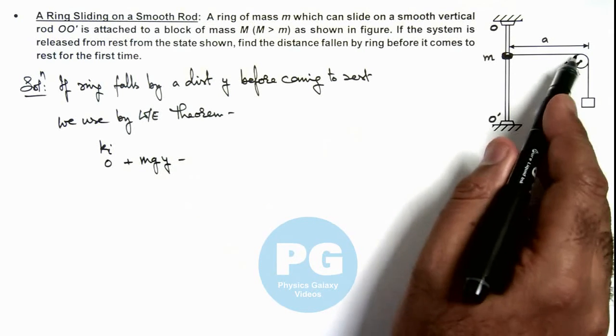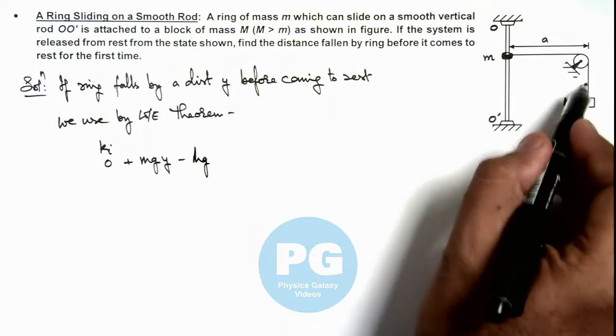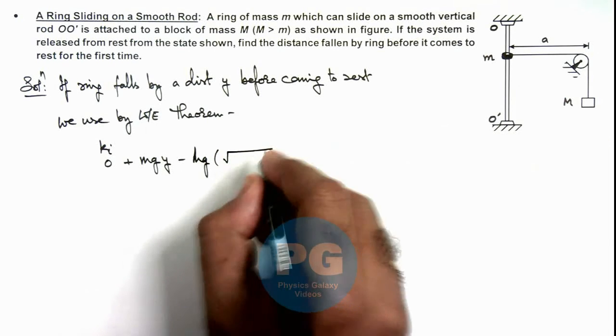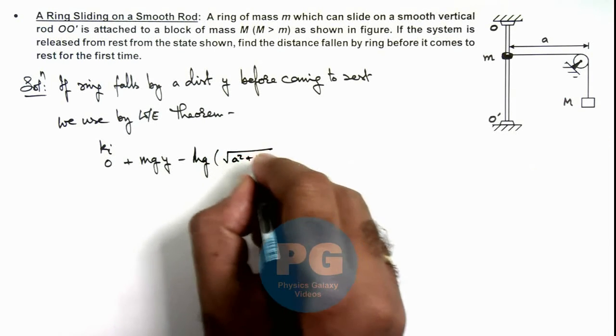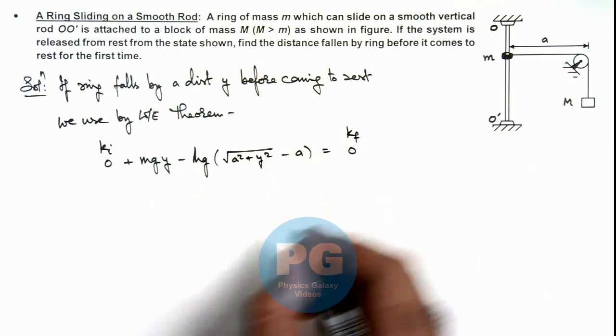By a distance root of ay square plus y square minus ay. So this will be minus Mg and the distance by which it will move up will be root of ay square plus y square minus ay. And the final kinetic energy can be taken as zero.